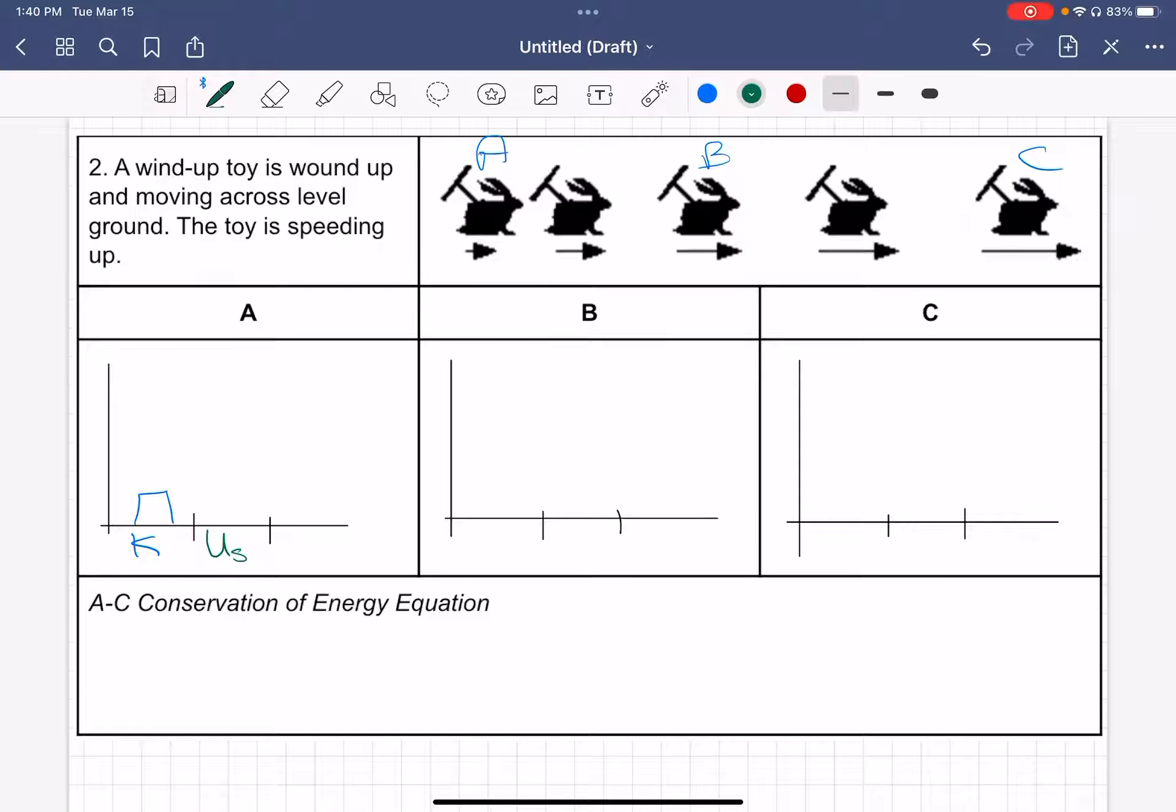Now, as a wind-up toy, I know there must be some kind of spring inside. When that spring is wound really tightly, it's going to be storing a lot of US. So I drew several blocks for my US. It doesn't matter exactly how many I draw. The main thing that's going to matter is the pattern or the trend that I show.